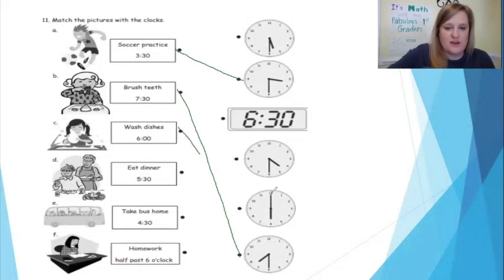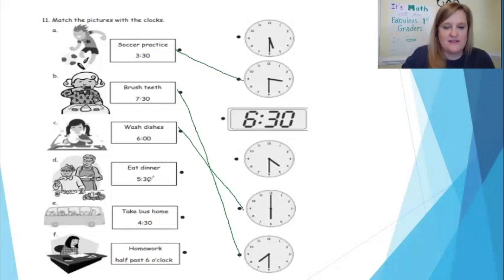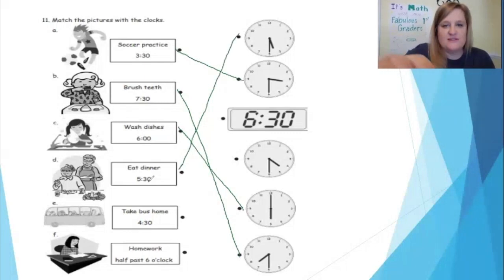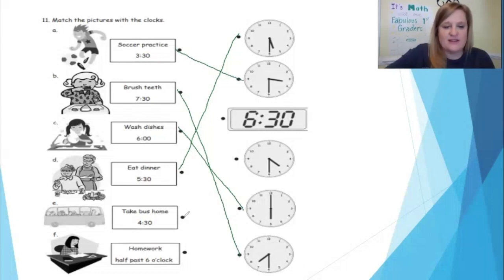So I'm going to match those clocks. Eat dinner at 5:30 — I eat dinner at 5:30, I'm going to match it to the analog clock. Take the bus home at 4:30. I found the clock that says 4:30.